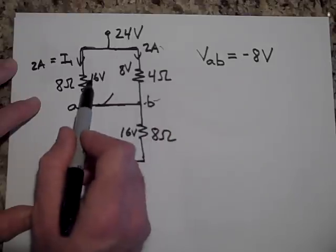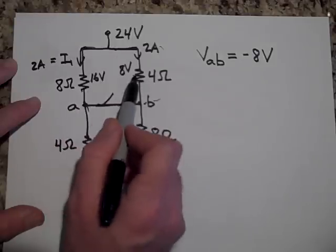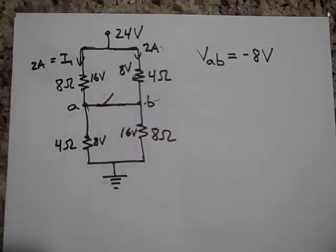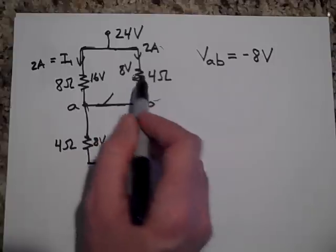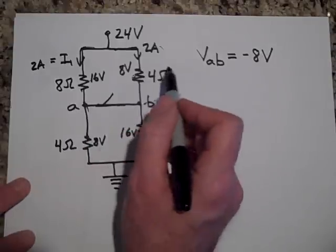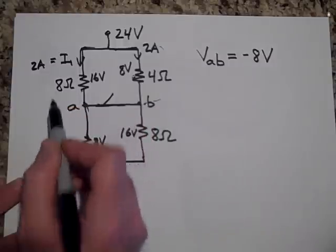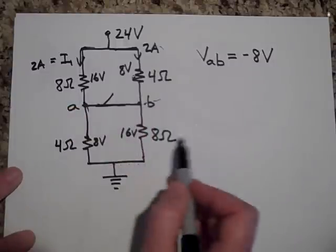So you can assume that, because of Kirchhoff's loop rule that these both have to be the same voltage. Well, if they both have to be the same voltage, then, because of symmetry, do you see how they both have to be 12 volts? When you close the switch, this is going to be 12 and that's going to be 12 because this has to be 12 and that has to be 12.